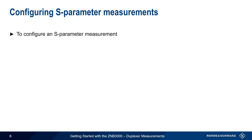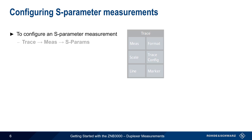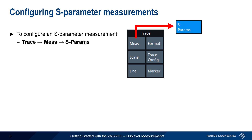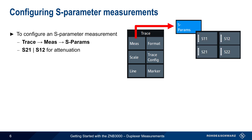The first step is selecting the type of S-parameter measurement. This is done by going to Trace → Measurement → S-Parameters. For attenuation measurements such as out-of-band rejection, insertion loss, and isolation, either S21 or S12 should be chosen. For SWR or return loss, choose either S11 or S22.